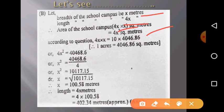According to the question, 4x² = 10 hectares. If we multiply 10 hectares by 4046.86, we get square meters, because 4046.86 square meters equals one hectare.